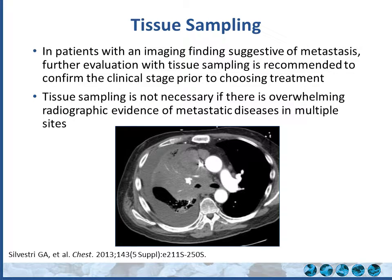The guidelines suggest that in patients with imaging findings suggestive of metastases, we further evaluate with tissue sampling to confirm clinical stage prior to choosing treatment. However, we must be thoughtful — if there's overwhelming evidence of cancer, such as pleural effusion, a large mass, multiple lung nodules, and adrenal involvement, that's an overwhelming picture of metastatic stage 4 lung cancer. In those situations, just go after one site to get a tissue diagnosis and adequate tissue.